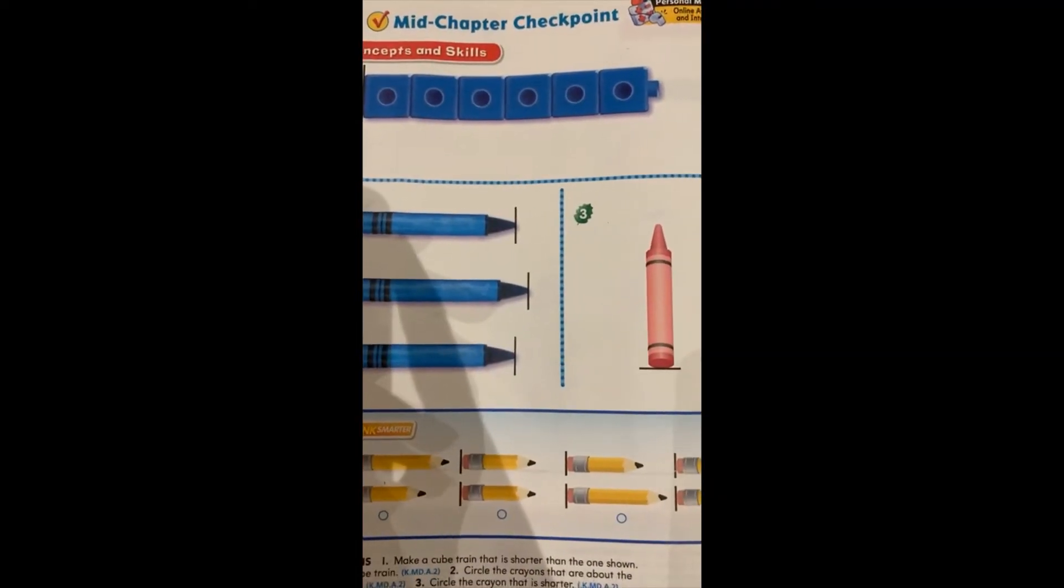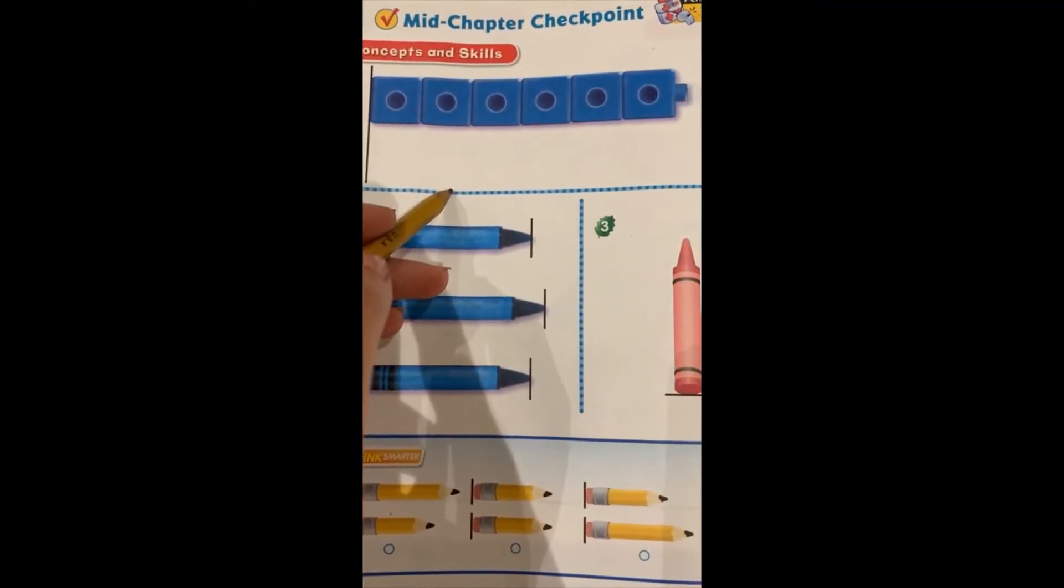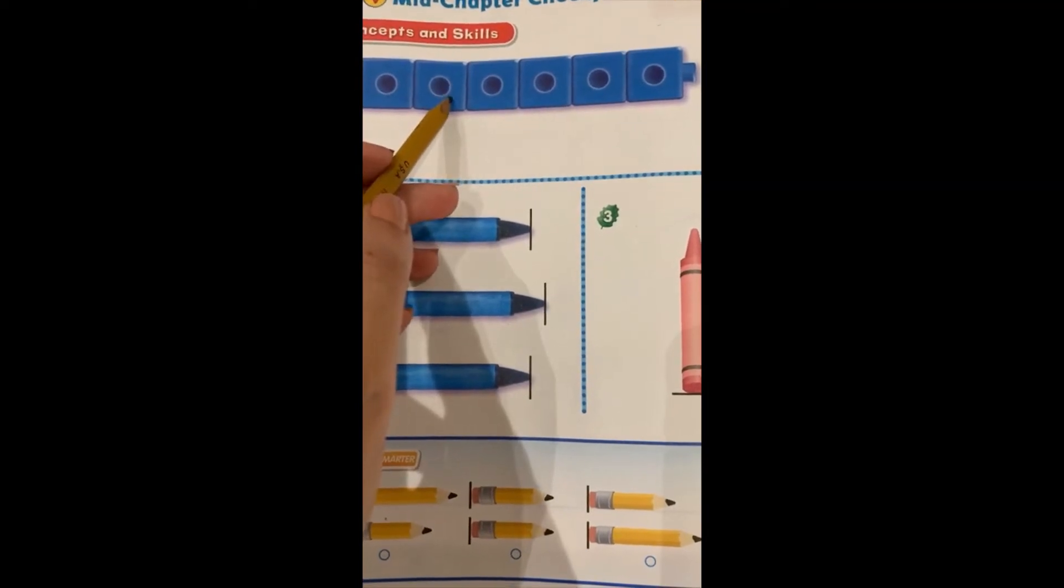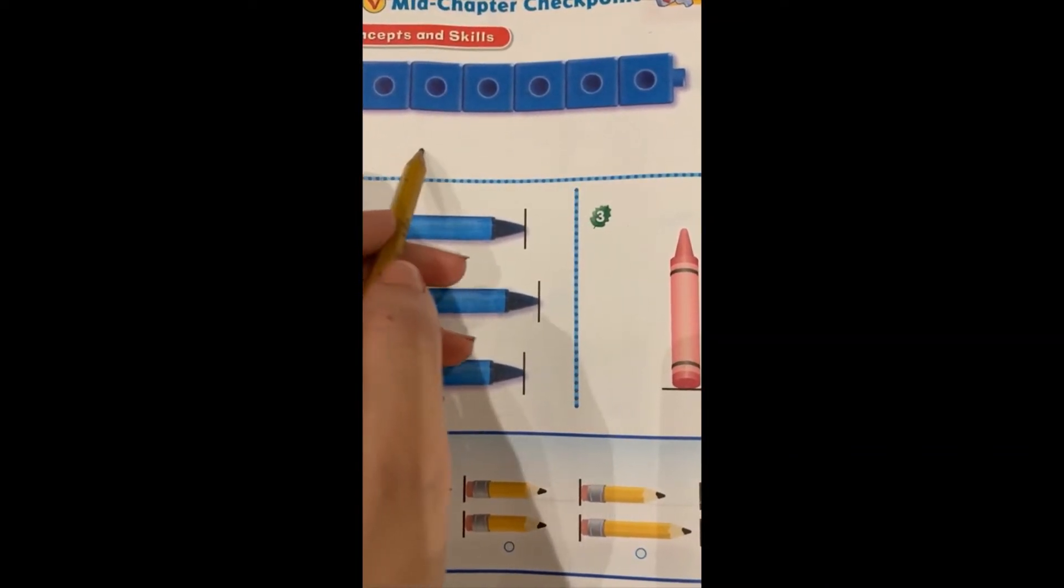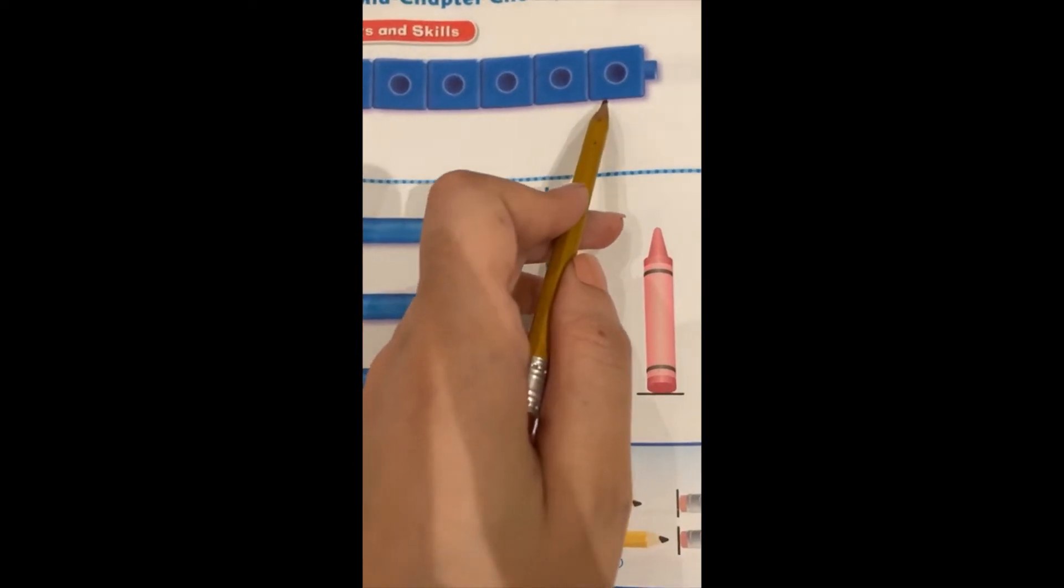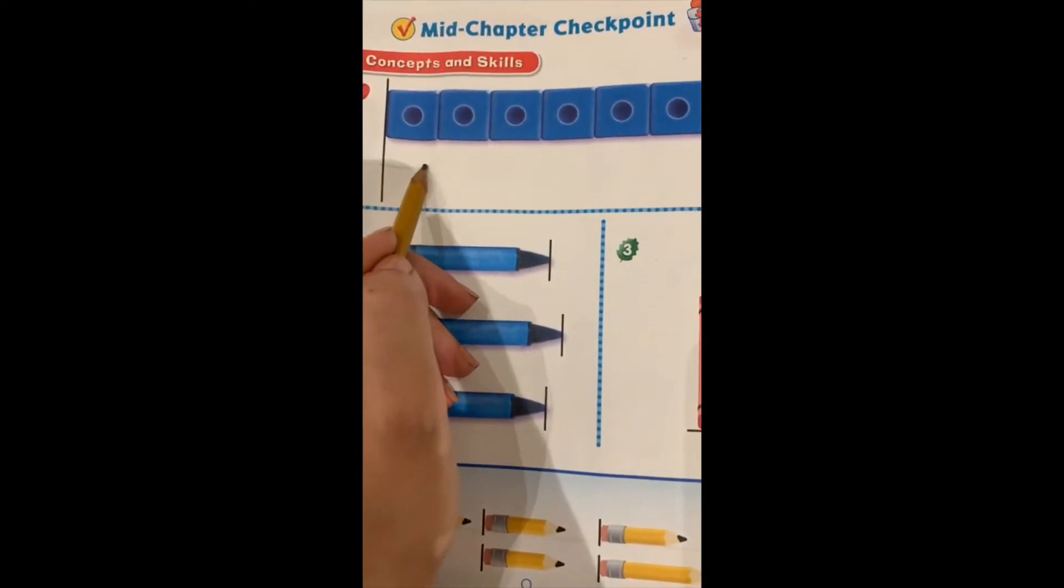Let's go to the last page. Look at exercise one. We have to make a cube train that is shorter than we have. At first, we have to build the same cubes, but at the end, we have to omit one or two cubes to make it shorter.